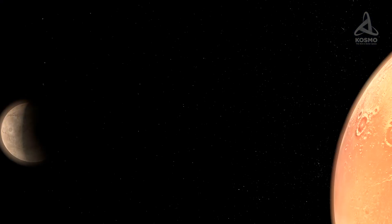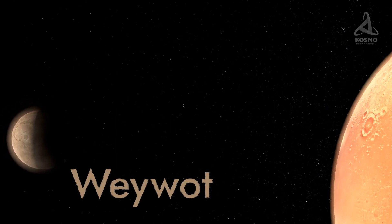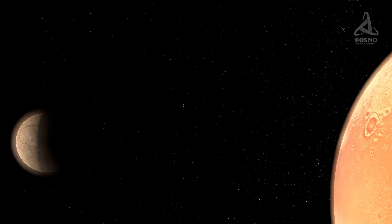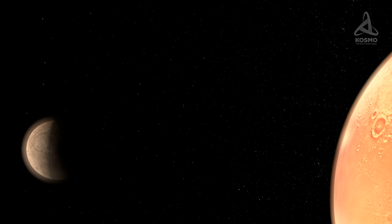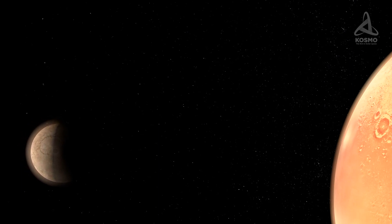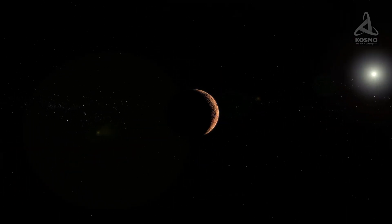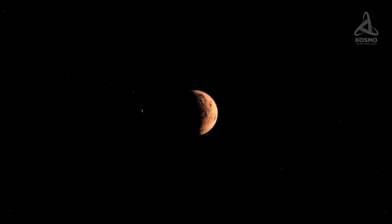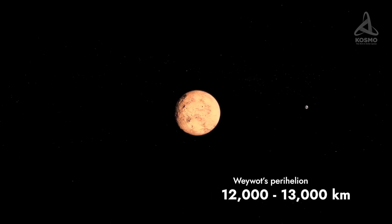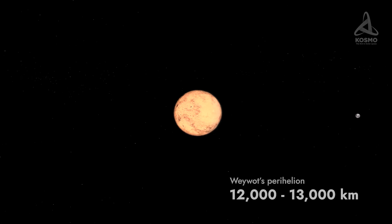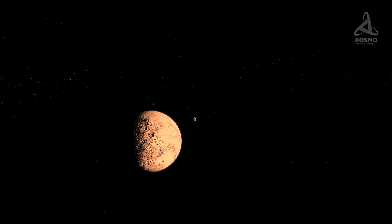Currently, Quaoar is known to have only one satellite. Dubbed Weywot, it was detected in 2006. This small astronomical body follows a moderately elongated orbit around the planetoid. Its aphelion is estimated at approximately 16,500 kilometers. In its perihelion, Weywot is anything from 12,000 to 13,000 kilometers away from the surface of the dwarf planet. The satellite completes a full orbit around Quaoar roughly every 12 and a half days.